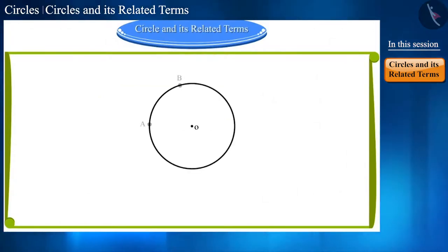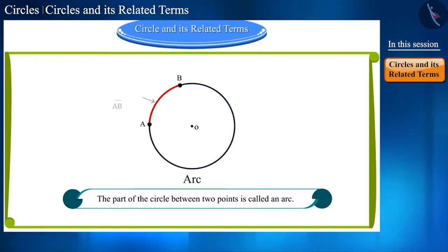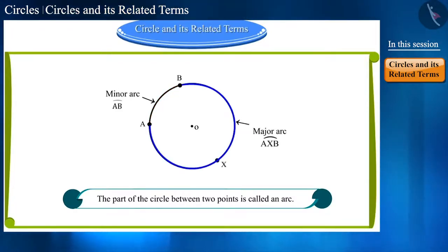If we take two points on a circle like this, then the part between these two points is called an arc. There are two parts here: the small part is called minor arc and the large part is called major arc.